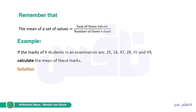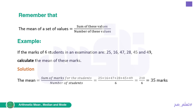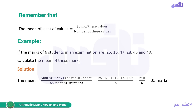To find the arithmetic mean, we write the rule: the sum of marks over the number of students. The sum of marks means we add all the numbers: 25 plus 16 plus 47 and so on. We count them: one, two, three, four, five, six — and the question already tells us there are six students, so we divide over six. By using a calculator we can find the final answer, which is 35 marks.